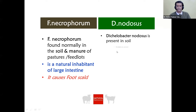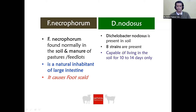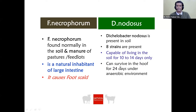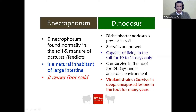Dichelobacter nodosus is also present in soil and has eight different strains. It is capable of living in the soil for only 10 to 14 days, but can survive in the hoof for 24 days under anaerobic conditions. Virulent strains can survive in deep, unexposed lesions in the hoof for many years, which is why foot rot prevalence is continuously high in sheep flocks.